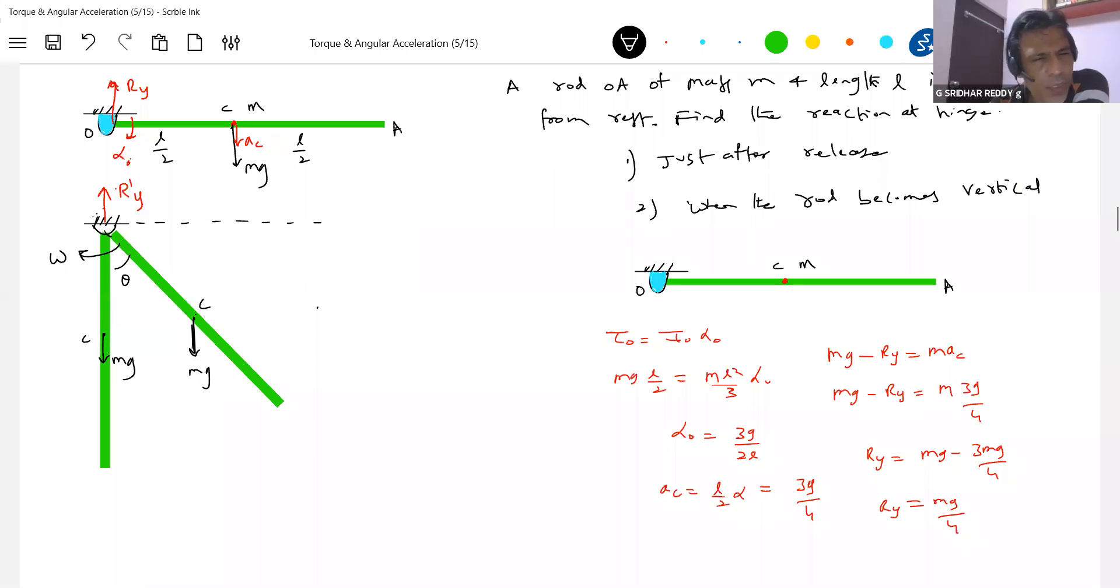Now what is work done by reaction? Zero. So only weight does work. So decreasing potential of the rod. How much potential of the rod will decrease? L by 2. So how much center of mass will descend? L by 2. There should be equal to increase in rotational kinetic energy of the rod.